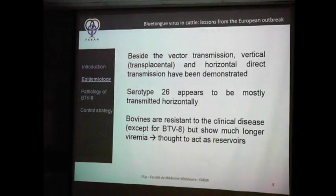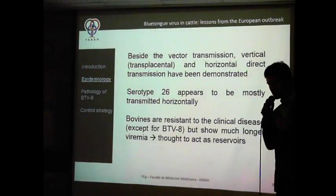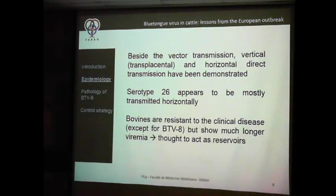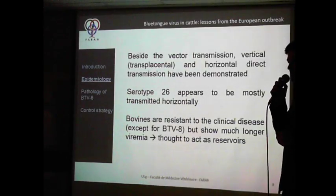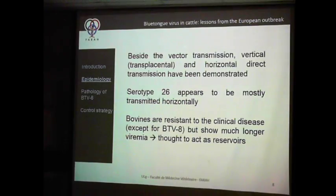There is also direct transmission — it has been clearly demonstrated that when cattle eat the placenta from an aborted fetus, there is oral transmission of the disease. Interestingly, serotype 26 appears to be mostly transmitted horizontally and not by a vector, which is quite unusual but has been described.